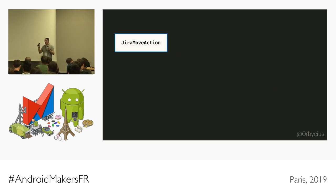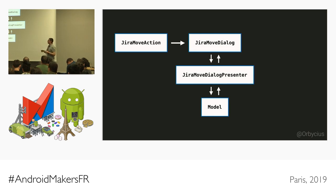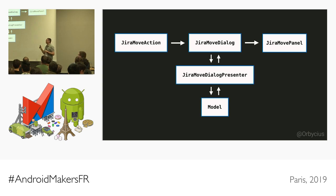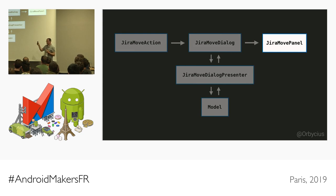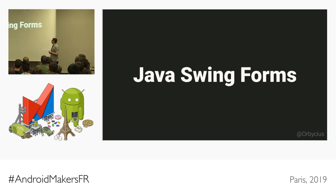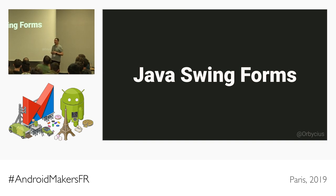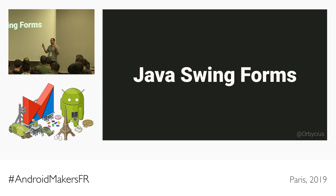Let's look at the Jira move action, which moves a ticket from one column to another. It's straightforward: there's a JiraMoveAction with a dialog, using a simple MVP pattern. The JiraMoveDialog also has a panel. To explain why, I need to explain how you write UI for plugins. The answer is Java Swing forms — IntelliJ requires us to use Swing to keep UI consistent with the IDE, providing many different Swing views to use.